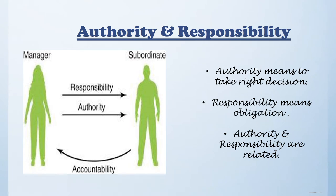The second principle of Fayol is authority and responsibility. According to Fayol, authority means the right to take decisions, and responsibility means the obligation with respect to the task one has to perform and for which they are getting paid. Fayol conceives that authority is a combination of official authority and personal authority. Official authority is derived from the manager's official position, whereas personal authority includes intelligence, experience, morale, and worth.